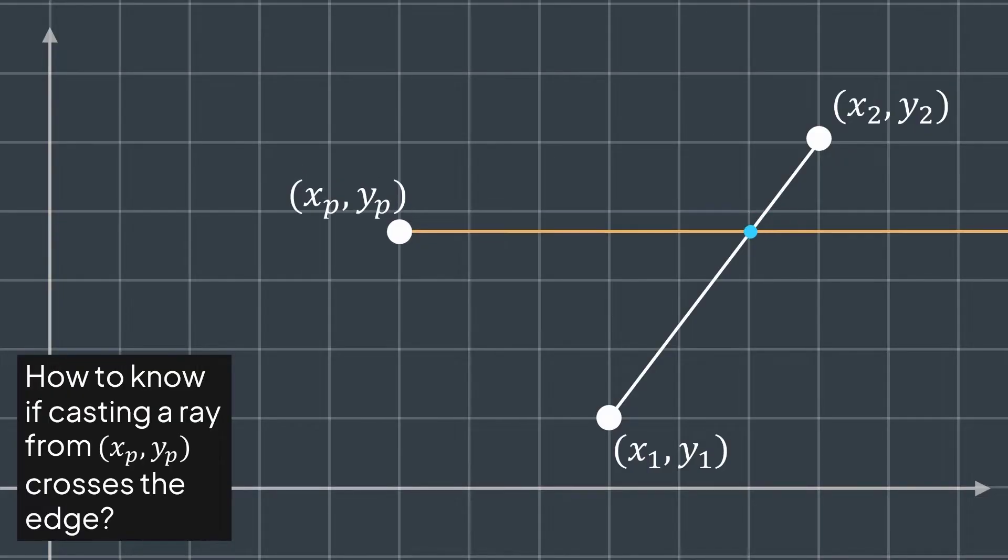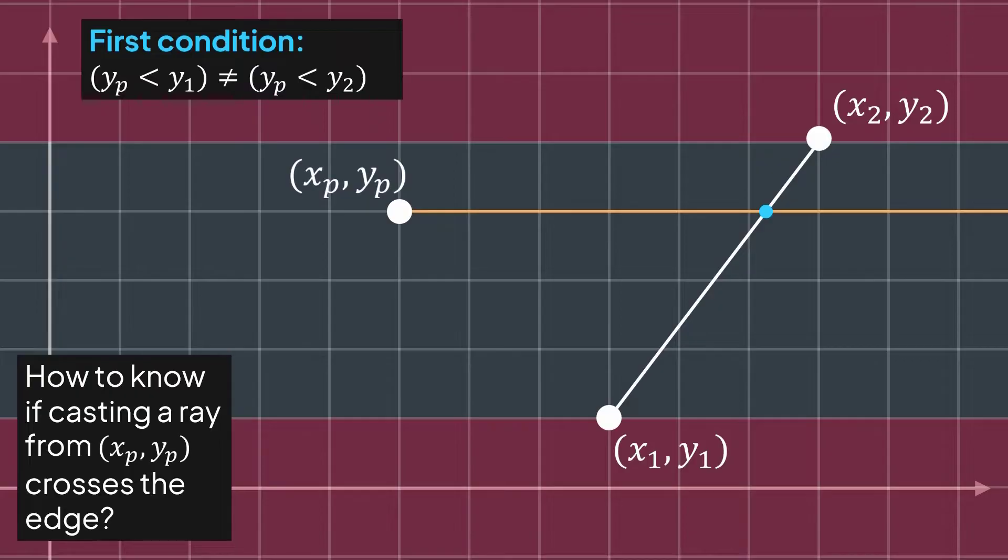First of all, if yp is smaller than both y1 and y2, then it doesn't cross. Same thing, if it's greater than both y1 and y2, it also doesn't cross. To cross, yp should be in between, either smaller than y1 but not smaller than y2, or smaller than y2 but not smaller than y1. Which we can combine in this expression: yp smaller than y1, different from yp smaller than y2.